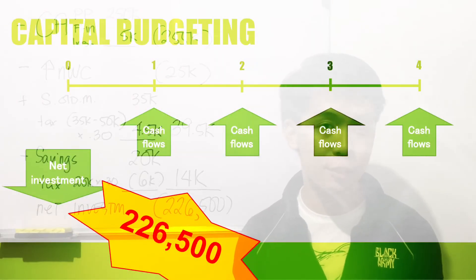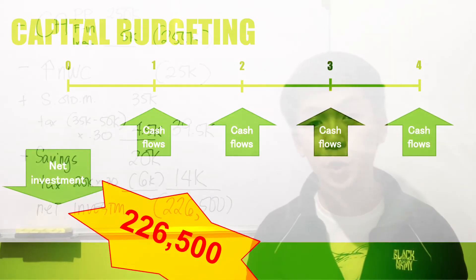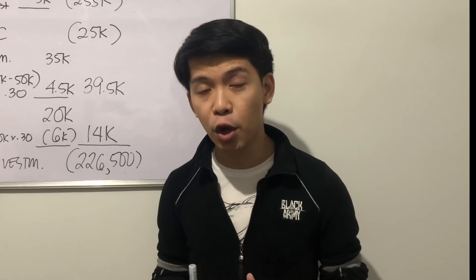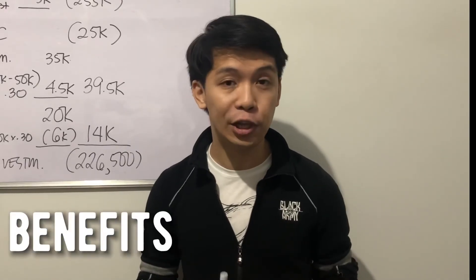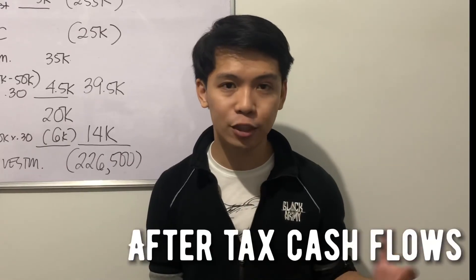Going back to the timeline, so far we have dealt with what happens in year zero — an outflow of $226,500. In the succeeding videos, we are going to talk about the benefits as a result of this investment. If we have an outflow in year zero, what's in it for us? We will have inflows in years one, two, three, and N, where N is the life of the project. We are going to calculate these benefits, which we call after-tax cash flows, and then tie them together by utilizing a capital budgeting technique — techniques necessary for evaluating a long-term project.